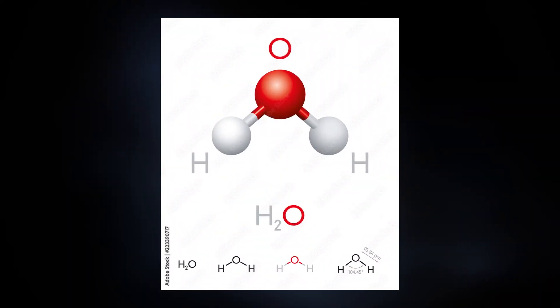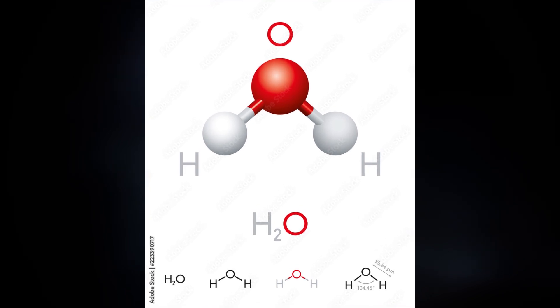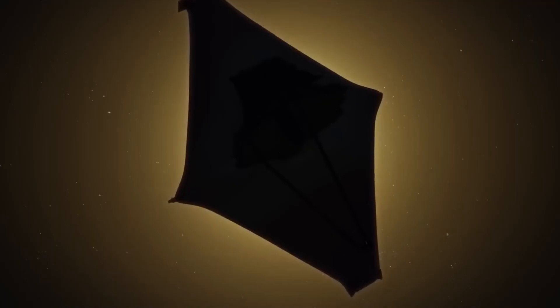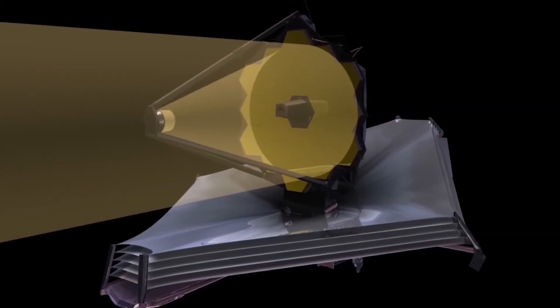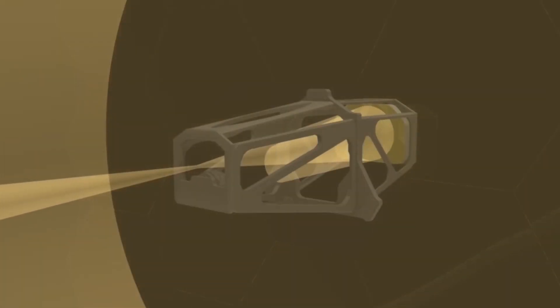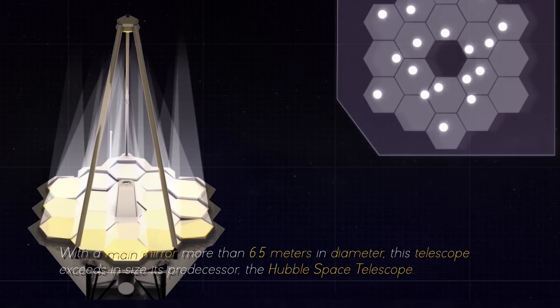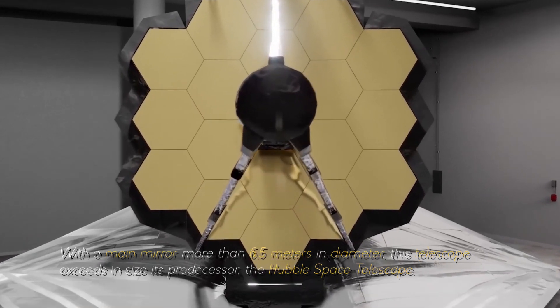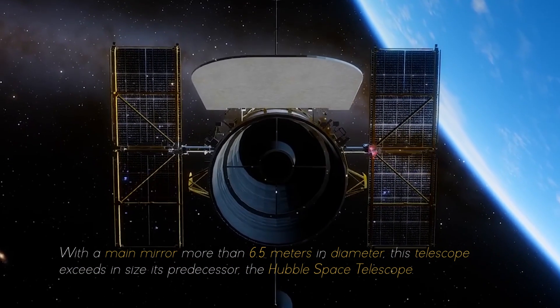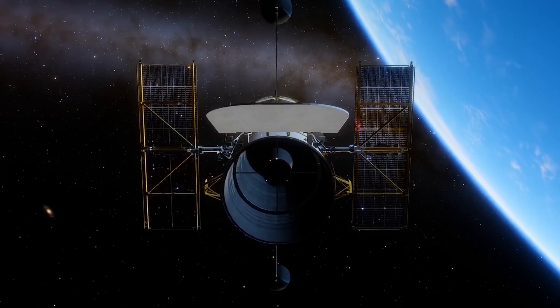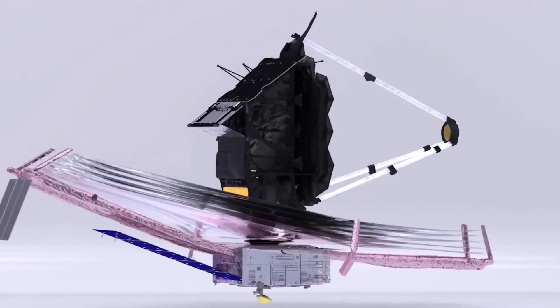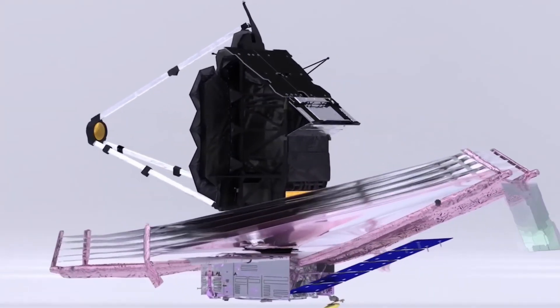What we are seeing here is the chemical signature of water vapor. The James Webb Space Telescope is equipped with an array of advanced scientific instruments carefully designed to observe the universe at an unprecedented range of wavelengths. With a main mirror more than 6.5 meters in diameter, this telescope exceeds its predecessor, the Hubble Space Telescope.